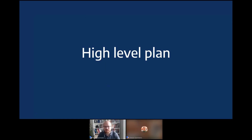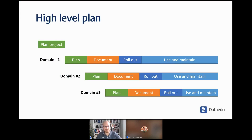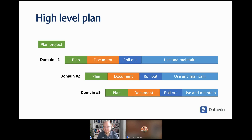Let's look at the high-level implementation plan. You've bought Data ITO or any other tool and you'd like to get started with documentation but don't know how. The first thing to consider is breaking your project into smaller phases — I call them domains. You take one data domain, a subset of your data at a time, and treat it as a separate project. It's better not to plan documenting everything at once, as that can be frustrating and makes it hard to tell if you're making real progress.